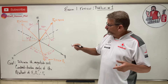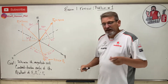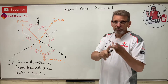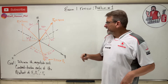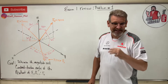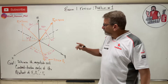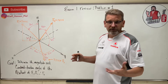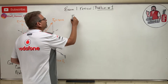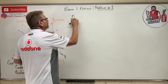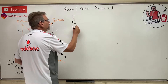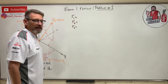Step one: look at the three vectors F1, F2, and F3 and decide how each is given. Remember our tools: we've got blue triangles, directional cosines, and coordinates. In this case we have all three — one of each. We want all three vectors written in ijk form.